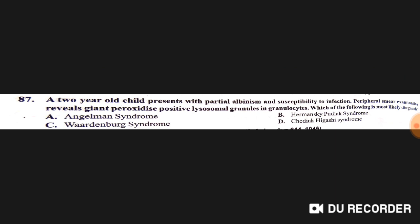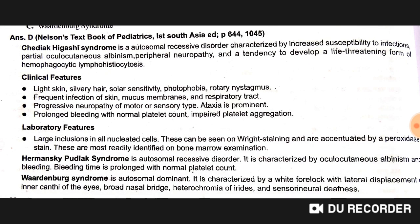A two-year-old child presents with partial albinism and susceptibility to infection. The most likely diagnosis is Chediak-Higashi syndrome — an autosomal recessive disorder characterized by increased susceptibility to infection.